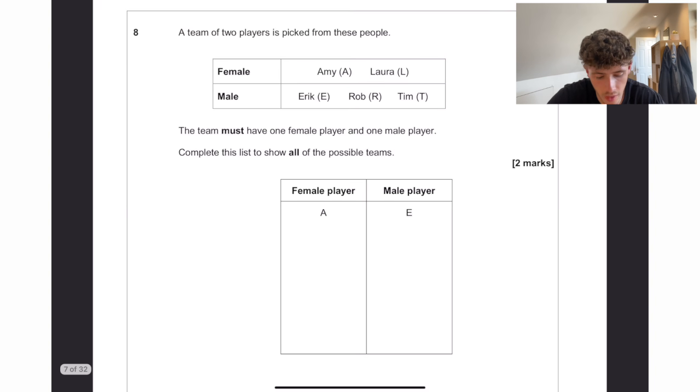A team of two players is picked from these people. The team must have one female and one male. Complete this to show all the possible teams. So we can have A and E, A and R, A and T. And then we can have L and E, L and R and L and T. So six teams in total.